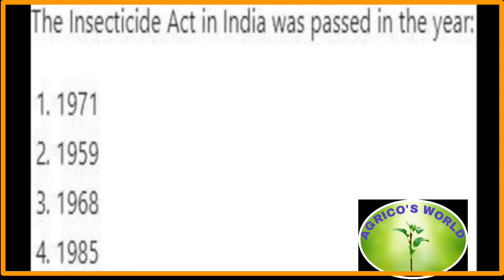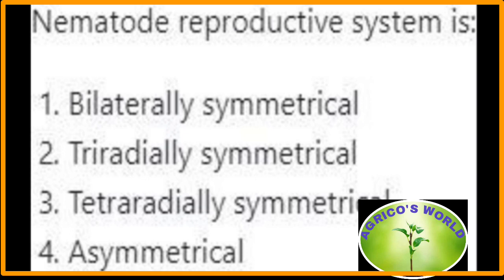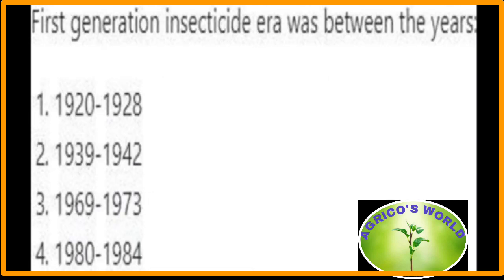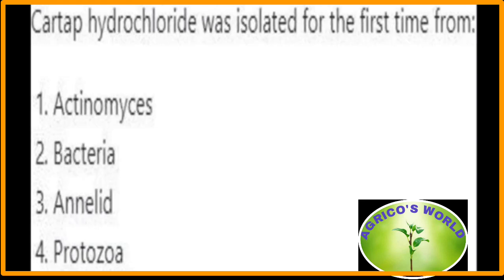The Insecticide Act in India was passed in the year 1968. The nematode reproductive system is asymmetrical. The First Generation Insecticide Era was between the years 1939 to 1942. Cartap Hydrochloride was isolated for the first time from annelids — specifically, the marine annelid Lumbriconereis heteropoda.